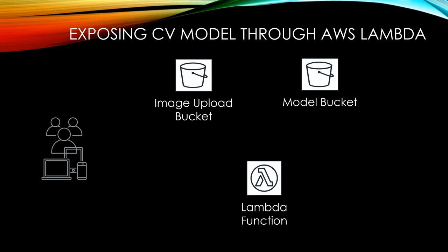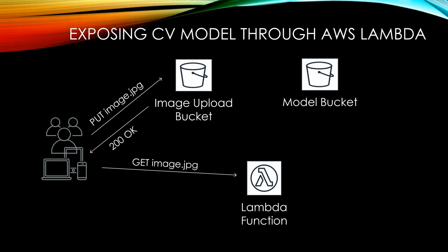Everything will start from image upload in the browser, and upon a successful response on an HTTP PUT upload request, JavaScript code will send a GET request to Lambda with the same image name as a parameter. The Lambda function will take this image name from the request and use it to download that image from the S3 upload bucket.